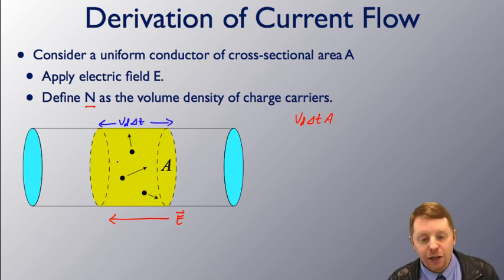So the total volume of charge carriers that are going to pass A will be this length v_d, the drift velocity times delta t times that area A. If we then multiply that by the volume charge density, we'll get the number of charge carriers passing A in a unit time.